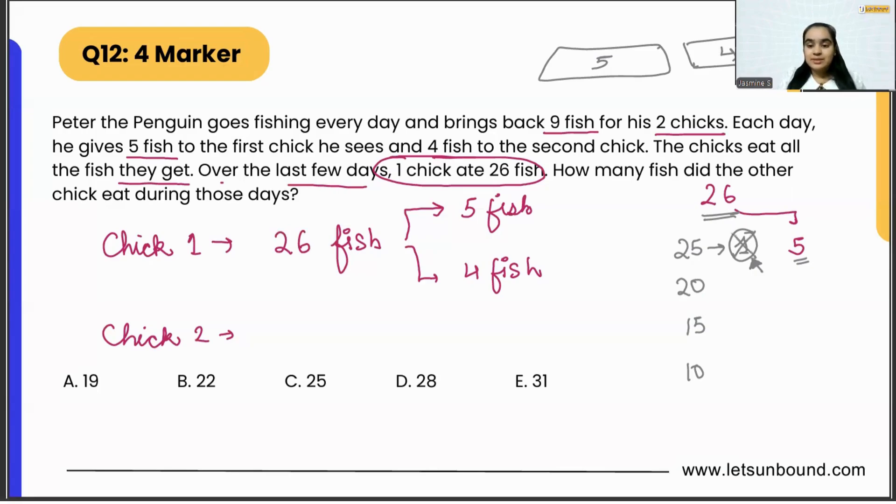As one is not divisible by four, we will not take 25. Let's say if the chick has eaten 20 fishes for the starting few days, the chick will be left with six, and that is again not divisible by four. We will not take it.